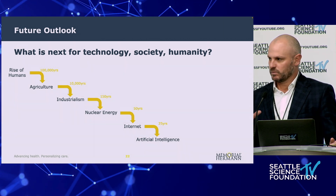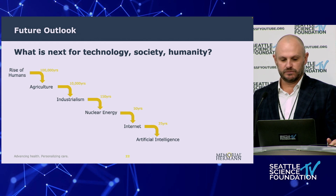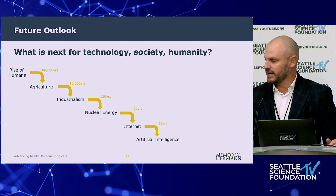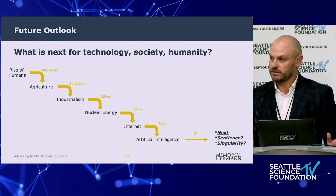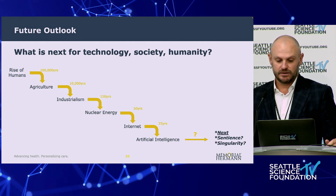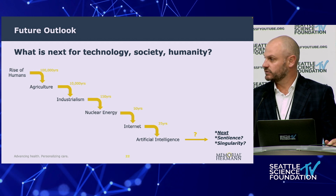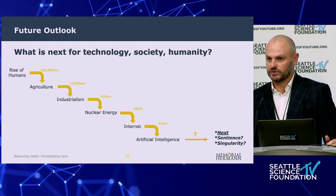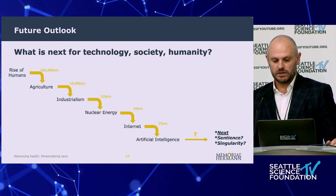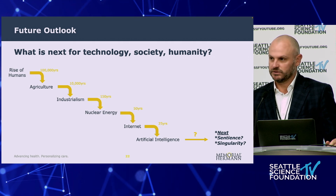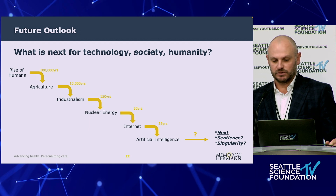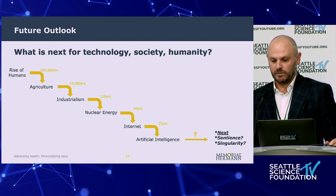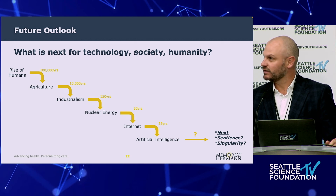Part of this is human milestones we've achieved and part of this is Moore's Law. So what is the next big thing going to be? We don't know yet, but it'll probably happen in the next five to ten years. Is it going to be sentience, where technology is aware of itself and able to communicate with us on a human level? Is there going to be a technological singularity? These are questions we have to ask ourselves, and I will tie this into spinal cord injury, I promise you.